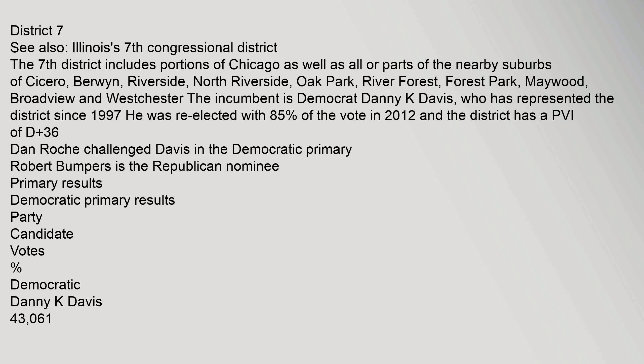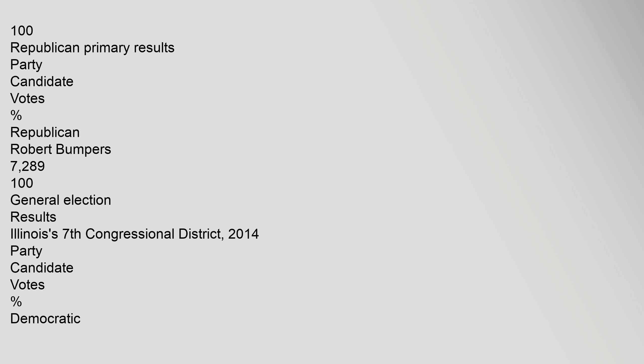District 7 — Illinois's 7th Congressional District. The 7th District includes portions of Chicago as well as all or parts of the nearby suburbs of Cicero, Berwyn, Riverside, North Riverside, Oak Park, River Forest, Forest Park, Maywood, Broadview, and Westchester. The incumbent is Democrat Danny K. Davis, who has represented the district since 1997. He was re-elected with 85% of the vote in 2012, and the district has a PVI of D+36. Dan Roche challenged Davis in the Democratic primary. Robert Bumpers is the Republican nominee. Democratic primary: Danny K. Davis – 43,061 votes, 100%. Republican primary: Robert Bumpers – 7,289 votes, 100%.